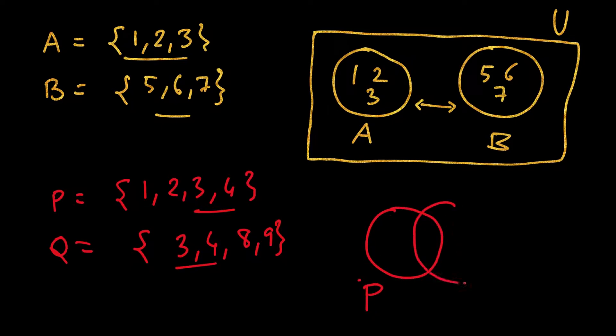We will draw P and some common region because we know there are some common elements. First, write the common elements 3 and 4, so this 3 and 4 is part of this circle as well as this blue circle. Now 1 and 2 only belong to P, so we will write it here. Similarly, 8 and 9 only belong to Q but not in P, so we will write 8 and 9 here.